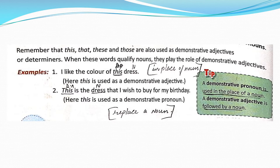In the example from your textbook, let us look at the first one: 'I like the color of this dress.' Here, 'this' is used as a demonstrative adjective. A demonstrative adjective is followed by a noun — 'dress' is the noun here, so this sentence uses a demonstrative adjective. The second example: 'This is the dress that I wish to buy for my birthday.' Here, 'this' is used as a demonstrative pronoun — a pronoun used in place of a noun.